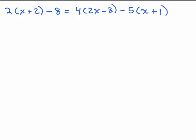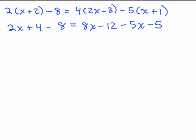Here's a tougher problem — put it on pause and try it yourself first. I'm going to do it fairly quickly. We need to simplify each side using the distributive property: 2x plus 4 minus 8 on the left. On the right, also use the distributive property to get 8x minus 12. When distributing the negative 5, that gives negative 5x minus 5. Combining like terms: left side gives 2x minus 4. Right side: 8x minus 5x is 3x, and negative 12 minus 5 is negative 17.